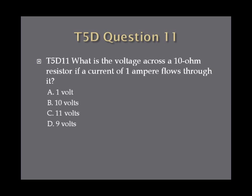Question 11: What is the voltage across a 10 ohm resistor if a current of 1 ampere flows through it? A. 1 volt. B. 10 volts. C. 11 volts. Or D. 9 volts.